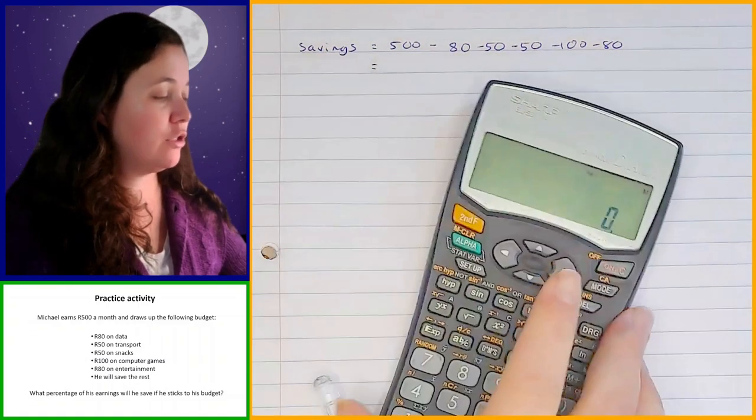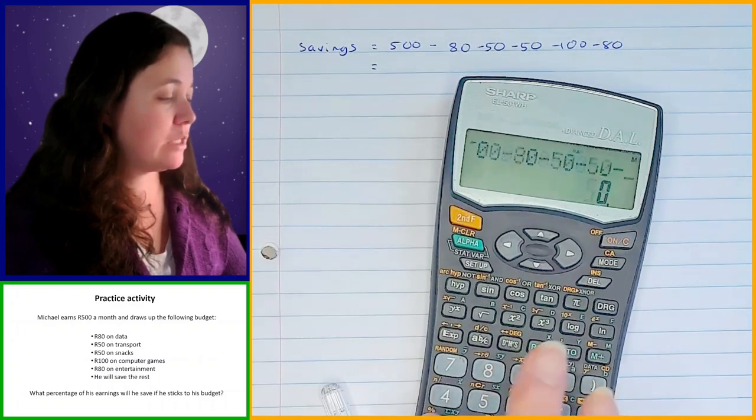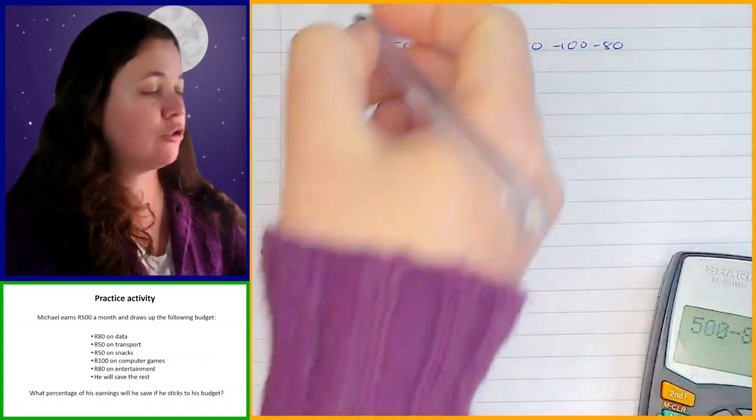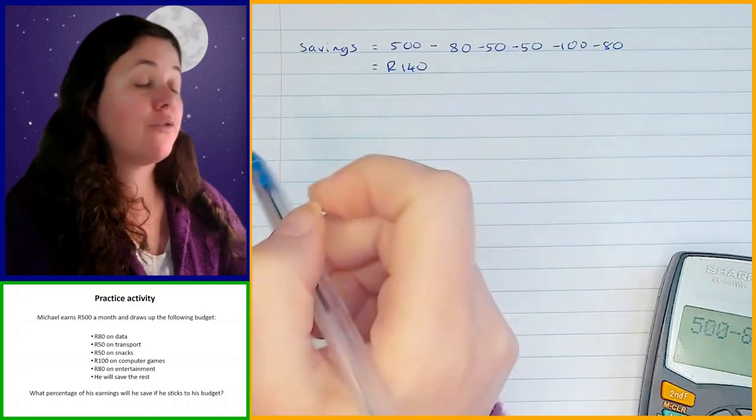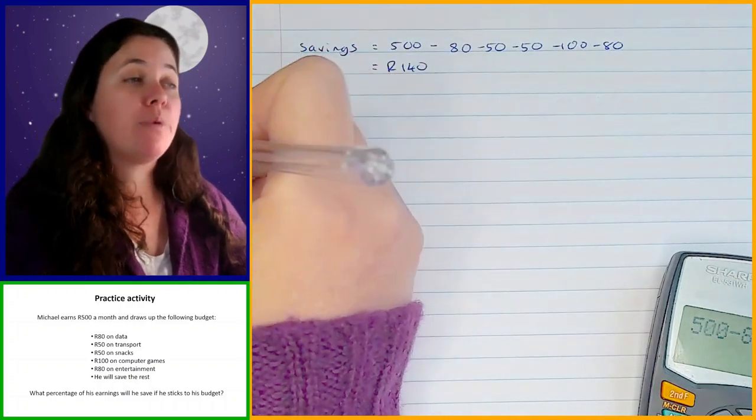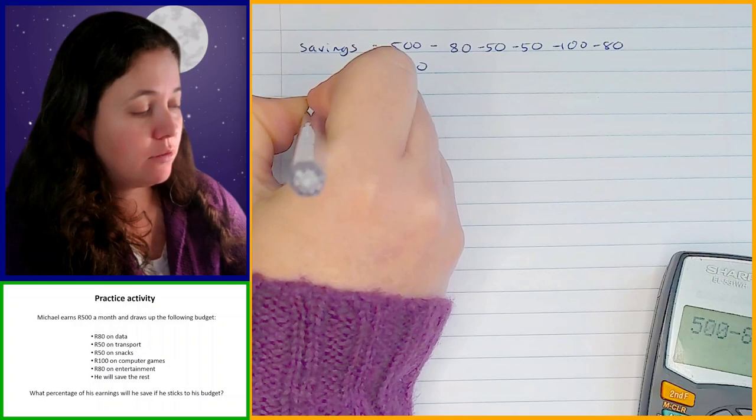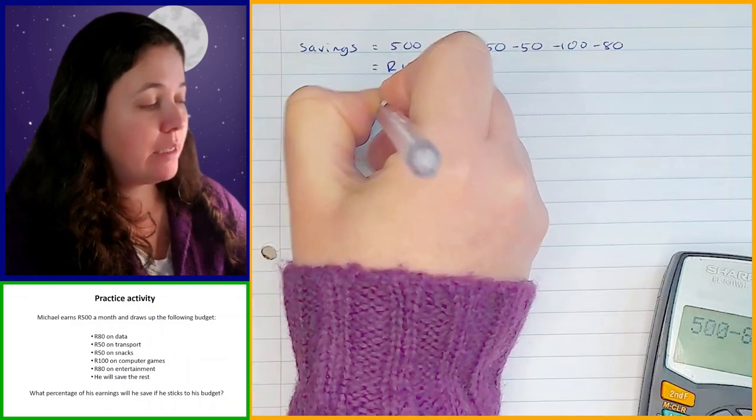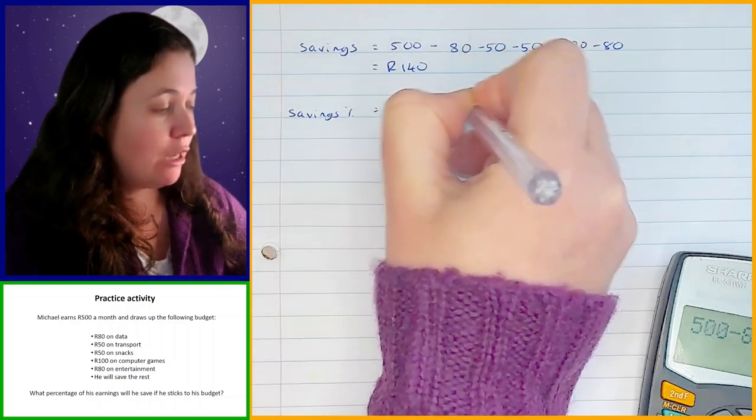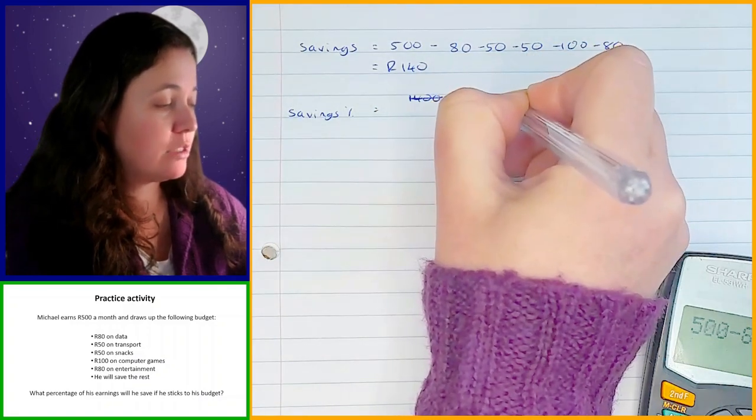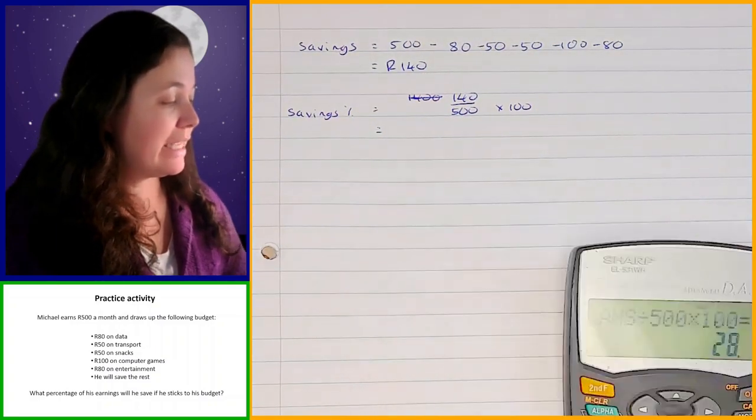So, we take 500, minus 80, minus 50, minus 50, minus 100, minus 80. And that gives us 140 rand. Okay, so that's the amount of money that he's planning on saving out of the total amount of money that he earns. Now, we can work out what percentage of his earnings he'll be saving if he sticks to his budget. So, his savings percentage is going to be that 140 rand that he's saving out of the total 500 that he earns, and times that by 100 to get a percentage. And that gives you 28 percent.